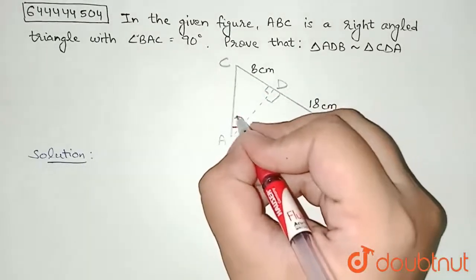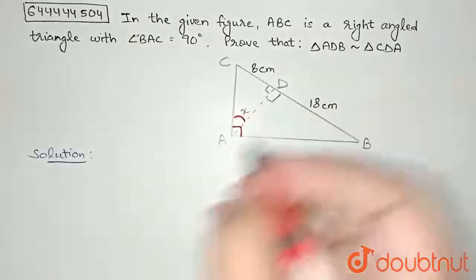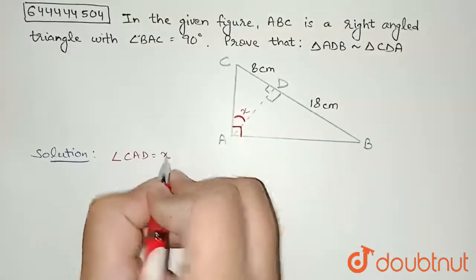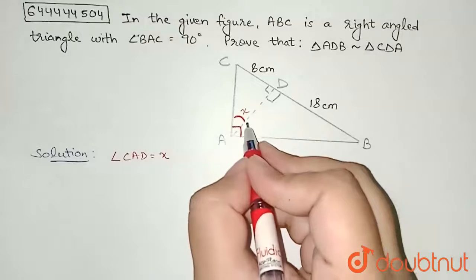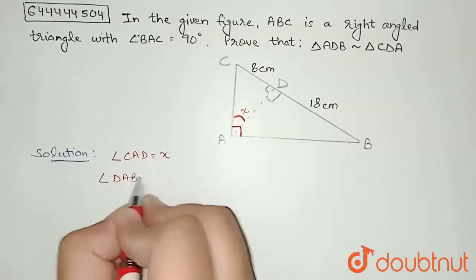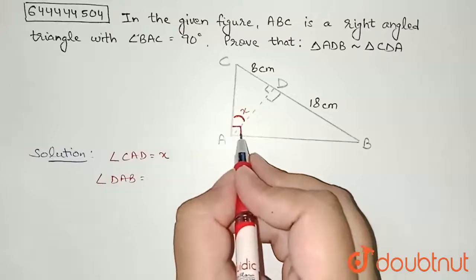Let us consider that this angle CAD, that is this angle, is equal to x. So I am considering angle CAD equal to x. From this we can see that this angle, that is angle DAB, will be equal to, since this is 90 and this is x, angle DAB is 90 minus x.